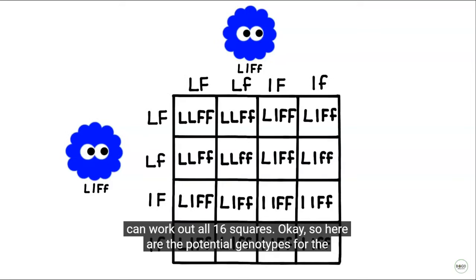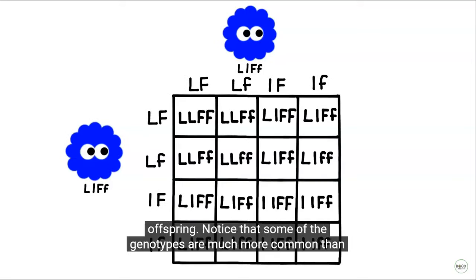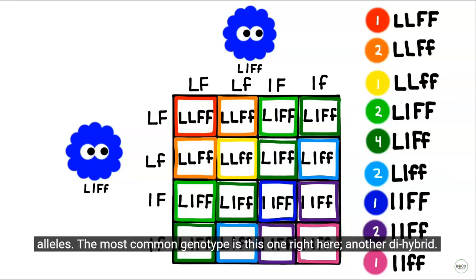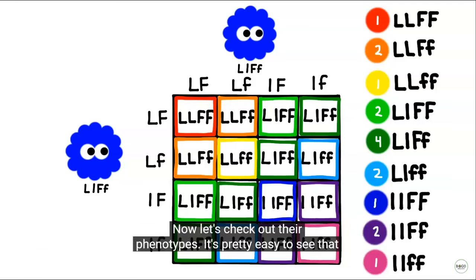Here are the potential genotypes for the offspring. Notice that some of the genotypes are much more common than others. If we color code them, we can see there are nine possible combinations of alleles. The most common genotype is this one right here, which is another dihybrid.